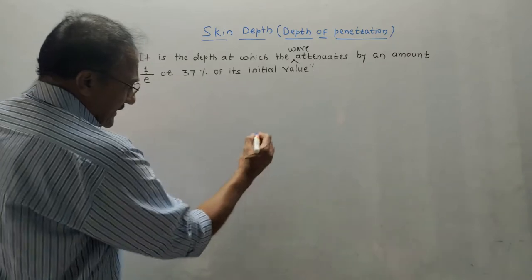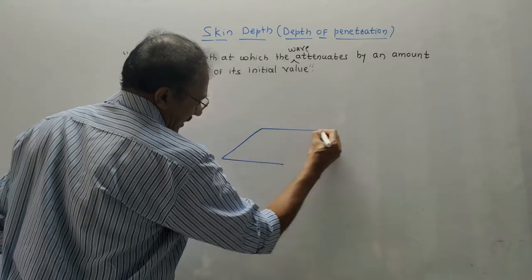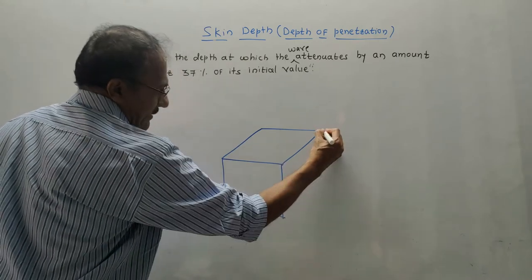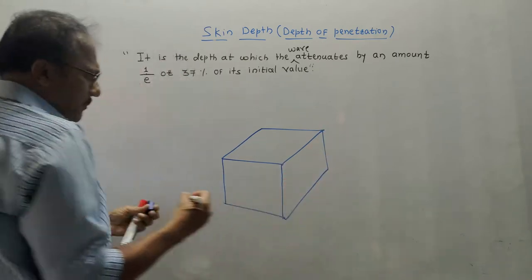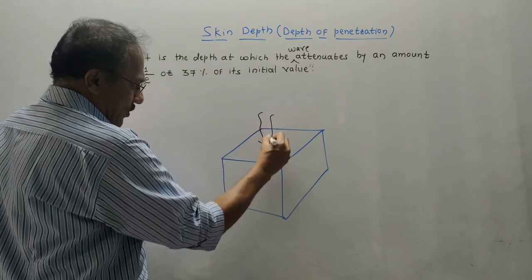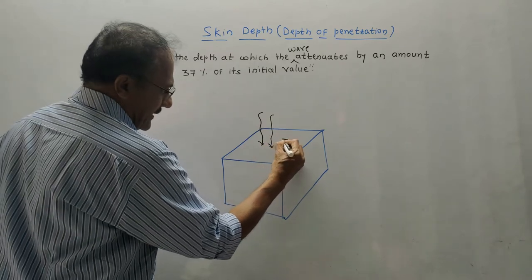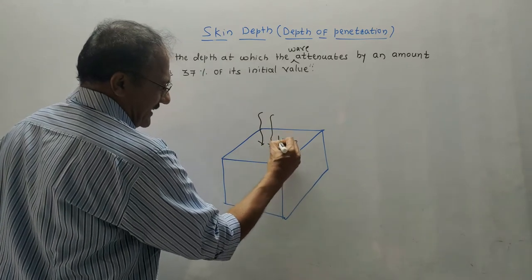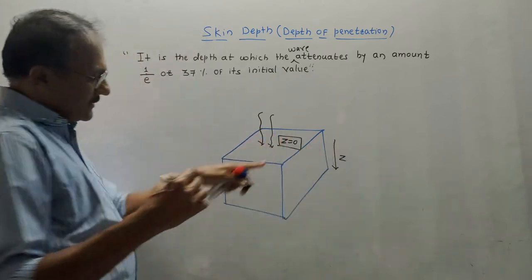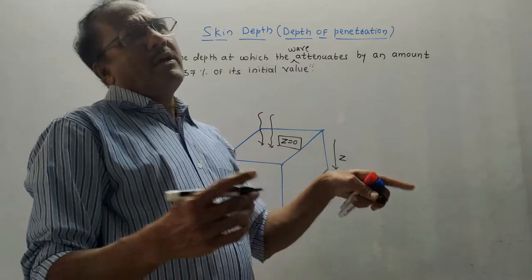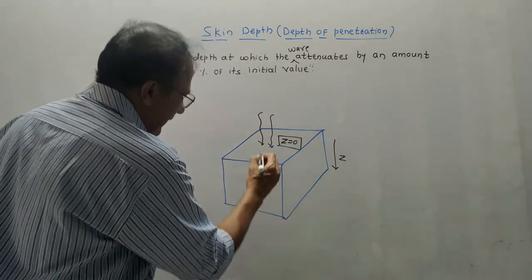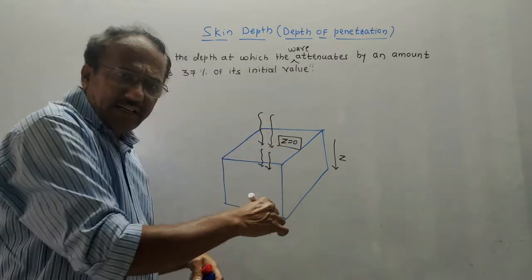Before discussing the definition, let me draw one diagram. I am drawing a diagram of some conductor having certain depth. Suppose incoming wave falls on the conductor and the surface of conductor is at z equals 0. This depth is related to distance z. The tendency is that whenever the wave falls on the conductor, it tries to move inside the conductor.